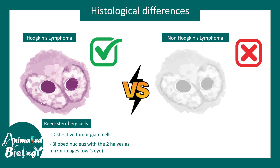For example, Hodgkin's lymphoma is characterized by the presence of Reed-Steinberg's cell. This is a distinctive giant tumor cell, which is a transformed B cell. Non-Hodgkin's lymphoma doesn't have this kind of Reed-Steinberg's cell — the absence of Reed-Steinberg's cell leads to the name non-Hodgkin.